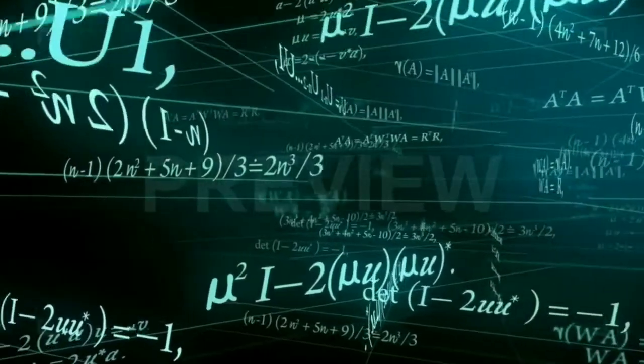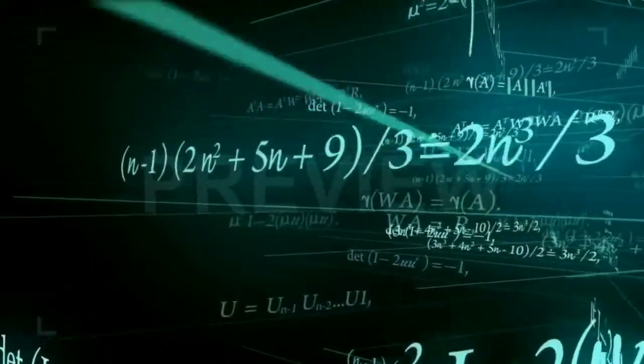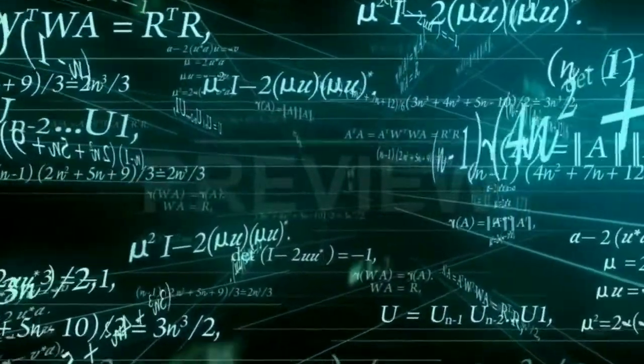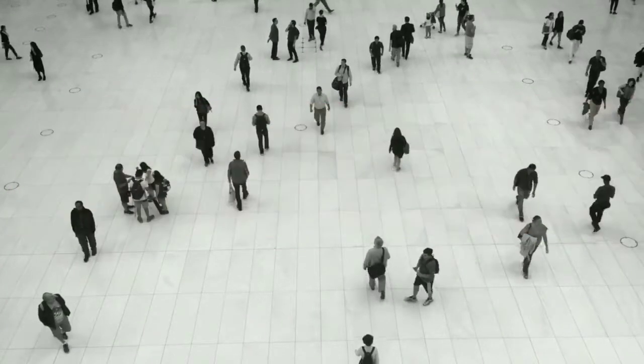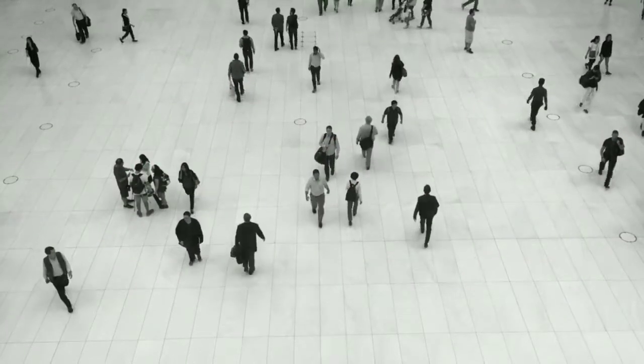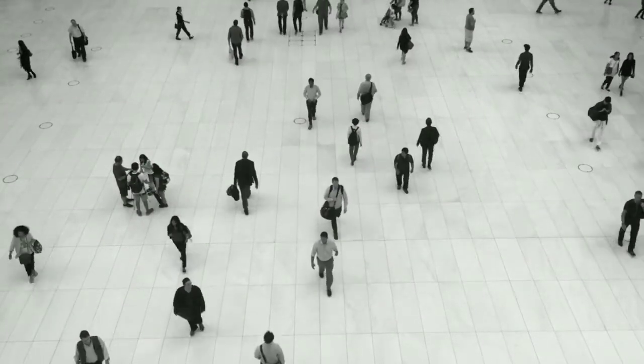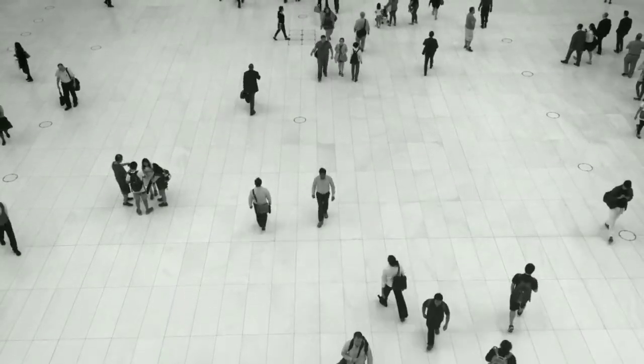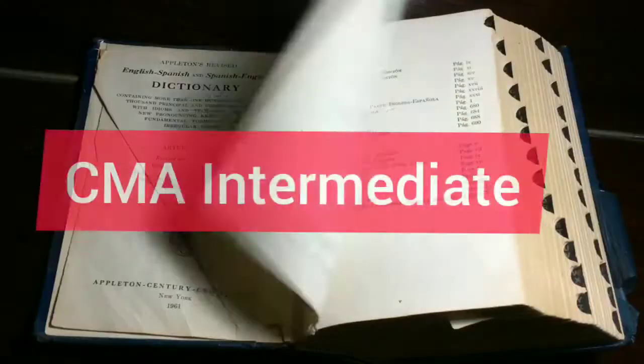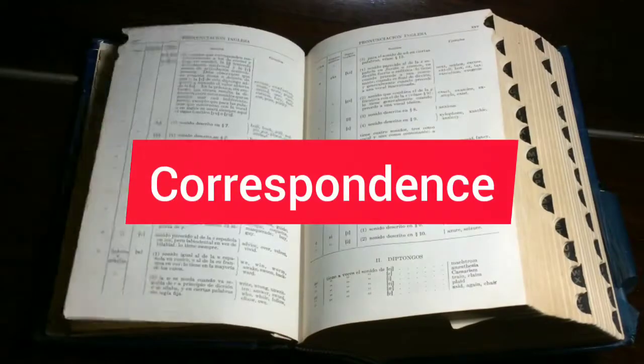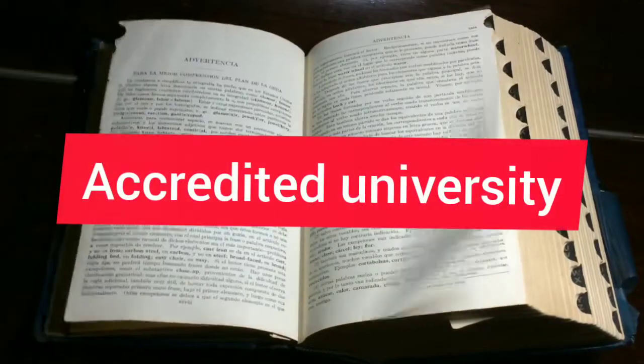Cost accounting has become one of the most popular professions for commerce students in recent times. One can become a cost accountant by taking up a cost management accountant course conducted by the Institute of Cost Accountants of India. The program intends to provide in-depth knowledge of finance and cost accounting. Just like CA or CS, even CMA has three stages: CMA Foundation, CMA Intermediate, and CMA Finals. You can attempt this course through correspondence or through online from an accredited university.